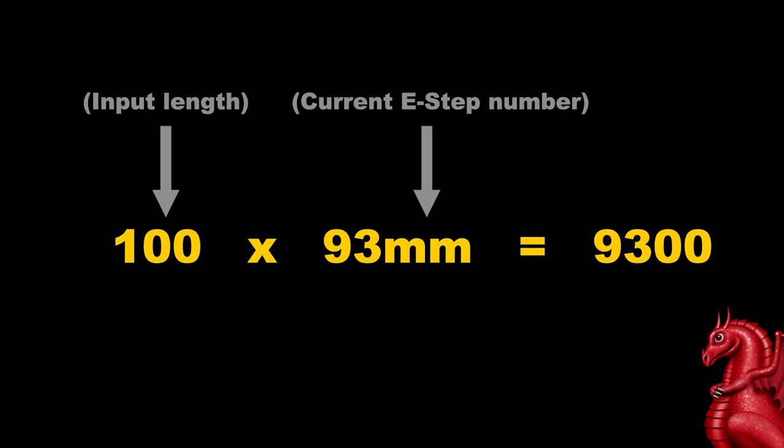The first calculation we're going to make: we're going to take 100, which is our intended length, multiply that by the current e-steps number, which is 93 (or if yours was different, multiply it by whatever that number is, but for a stock Ender 3 or an Ender 5 it should be 93), and that gives us 9300. So write that number down.